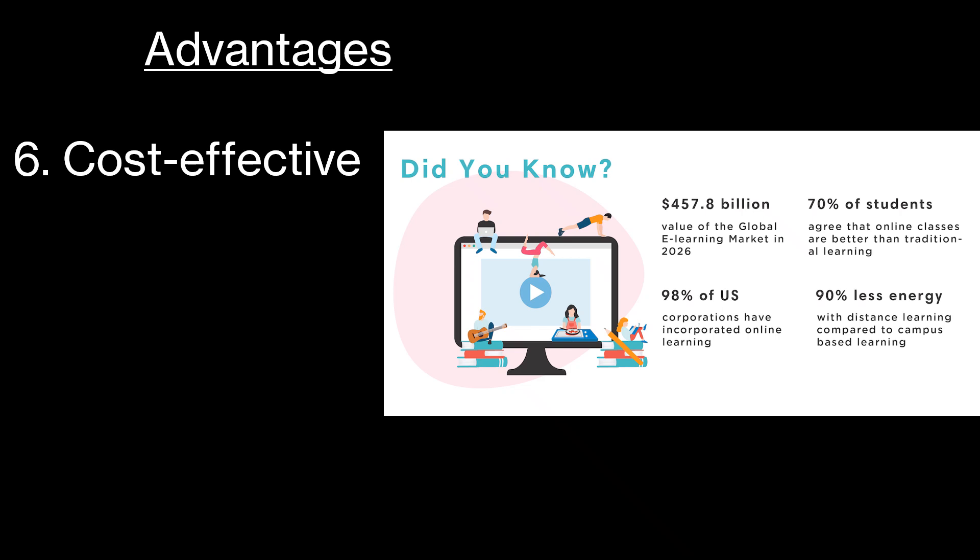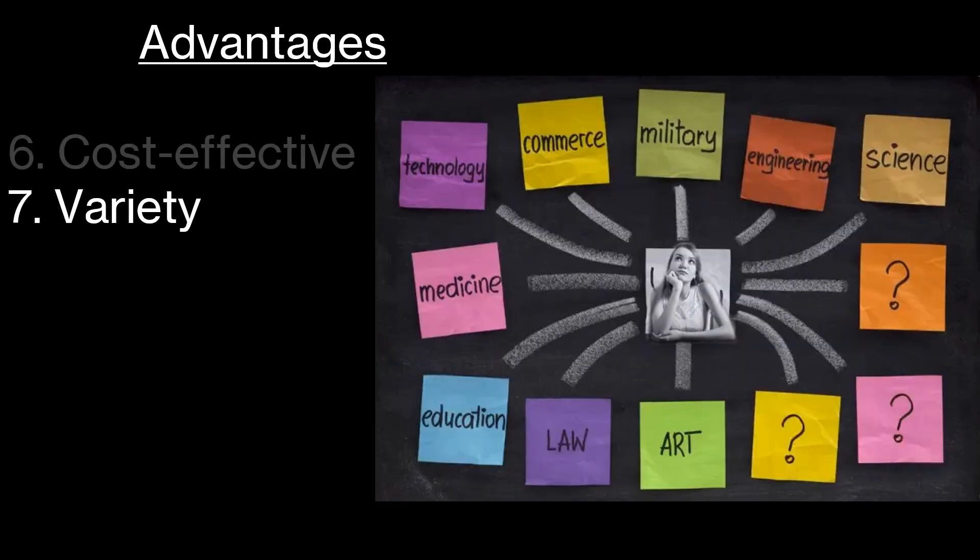Point six, reduced costs. Say goodbye to the expenses for commuting, textbooks, and campus meals. This is cost-effective learning at its best. Advantage seven is the huge variety of options. From cooking to coding, the sky's the limit. Pick what suits your interests and also your career aspirations.